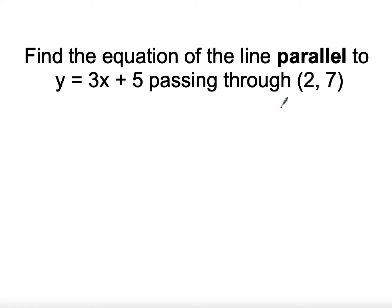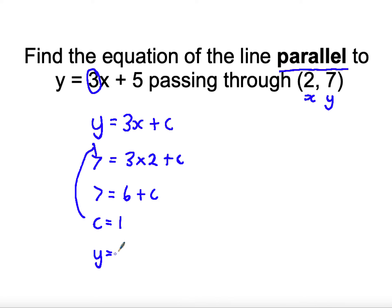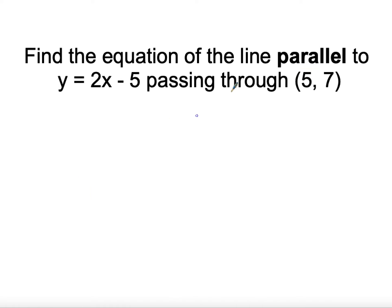This time the x-coordinate isn't zero so we can't just read off the y-intercept. Parallel means same gradient; gradient is 3, so y equals 3x plus c. Substituting the point (6, 7): 7 equals 3 times 6 plus c, so 7 equals 18 plus c... wait, 7 equals 6 plus c — c is 1. Therefore y equals 3x plus 1. Checking: y coordinate 7 is three lots of x coordinate 6 plus 1. Correct.